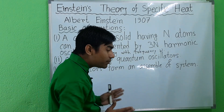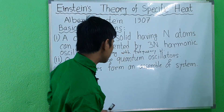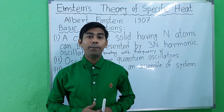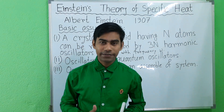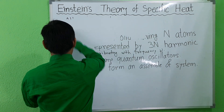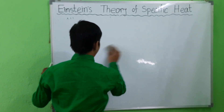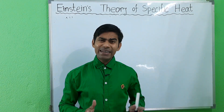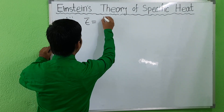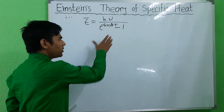The third assumption is that the oscillators form an ensemble system and they obey the Maxwell-Boltzmann distribution law. Albert Einstein used the expression for mean energy deduced by Planck on the basis of quantum theory. According to Planck's theory, the mean energy of an oscillator is ε̄ = hν / (e^(hν/kT) − 1).